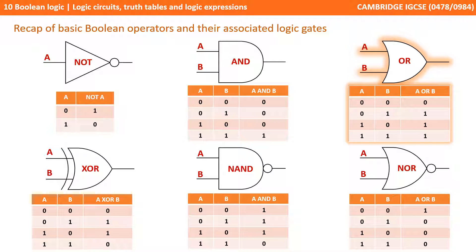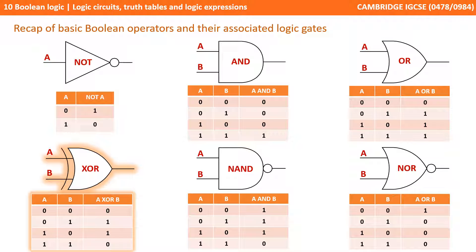Next comes the OR gate. With an OR gate, at least one of the inputs needs to be true, and as long as it is, the output is true. This differs slightly from an XOR gate, where only one of the inputs must be true but not the other for the output to be true.